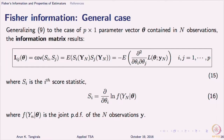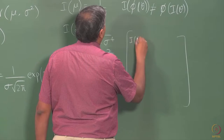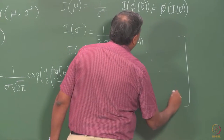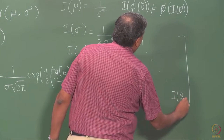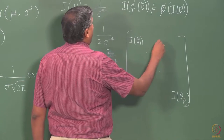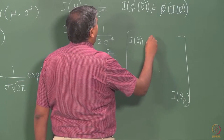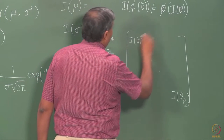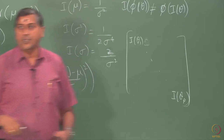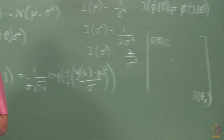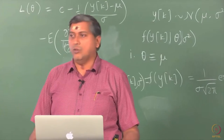Until now, the information metric has been a scalar, but now it becomes a matrix. What does this matrix contain? It is going to contain information about the individual parameters along the diagonals, and then it is going to contain information about estimating two parameters jointly. It is not going to contain information about the product of theta 1 and theta 2.